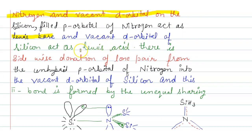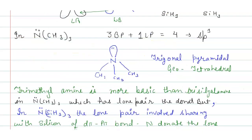The filled p orbital acts as Lewis base and vacant d orbital of silicon acts as Lewis acid. There is sidewise donation of lone pair from the unhybridized p orbital of nitrogen into the vacant d orbital of silicon, and this pi bond is formed by the unequal sharing.